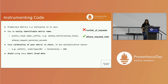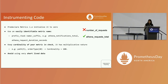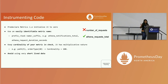Apart from that, most of us face cardinality issues a lot of the time. The best way to deal with it initially is to have a rough idea of what cardinality you would be introducing with your metric, and just mention it — maybe in your PR or commit — that this is the cardinality you are expecting. That saves a lot of time.